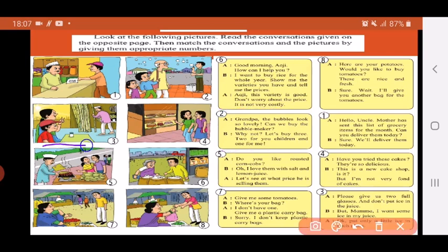Now picture number three. Here is a picture of a sugar cane shop. There's a lady and her son who have come to drink sugar cane juice. Now let's read the last conversation box.